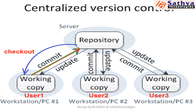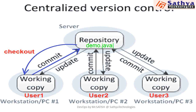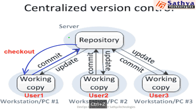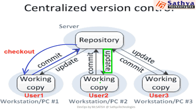Once we commit the code, other developers can get the code by updating their working copy. For example, developer one has added a file like demo.java, and other developers can get that code by updating their working copy. When to use checkout versus update: if you want to get a copy of the repository, use checkout. If you already have a working copy but want to get other developers' new changes, then use update. That covers the centralized version control system.